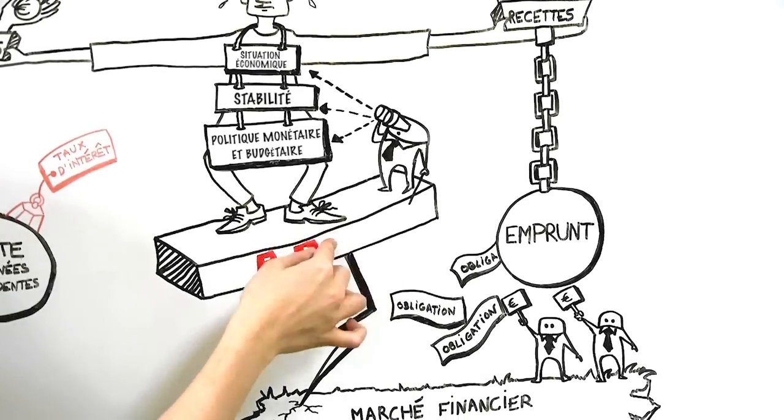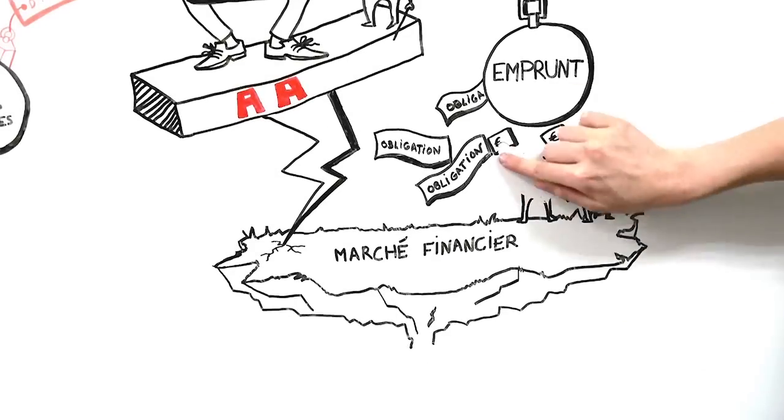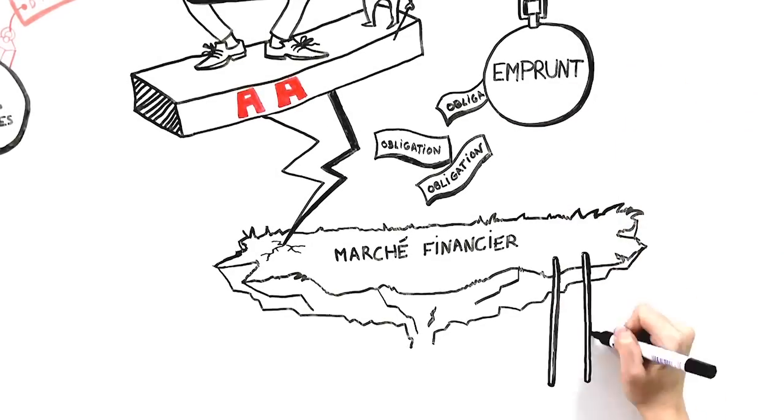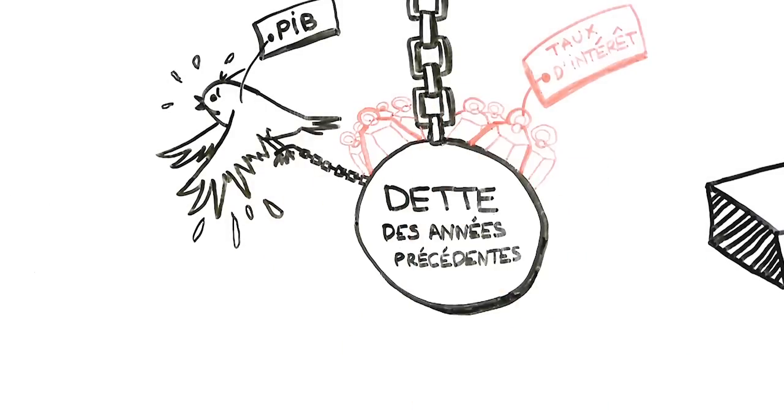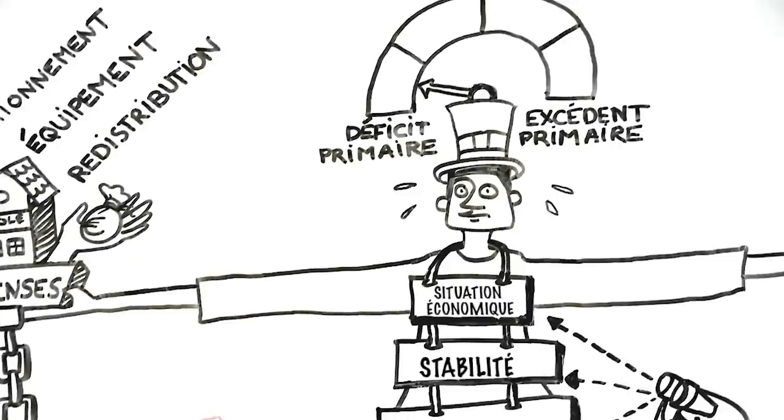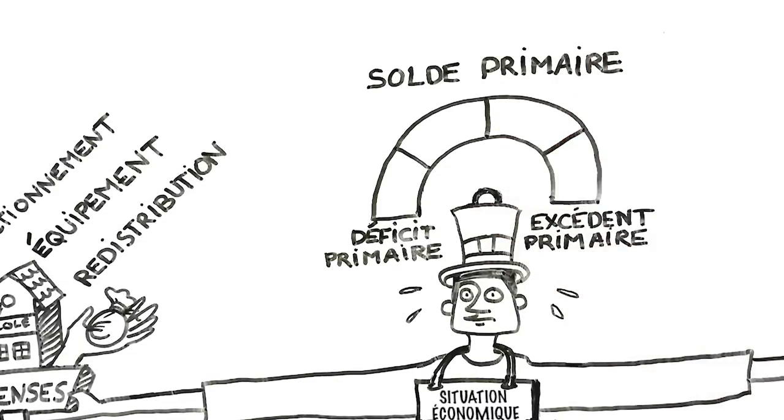If a country's rating is downgraded, investors are likely to lose confidence in the country's ability to pay back. They will no longer be willing to buy its bonds. This pushes bond yields up further, increasing the country's interest payments and making it even more difficult for the country to meet its payments.